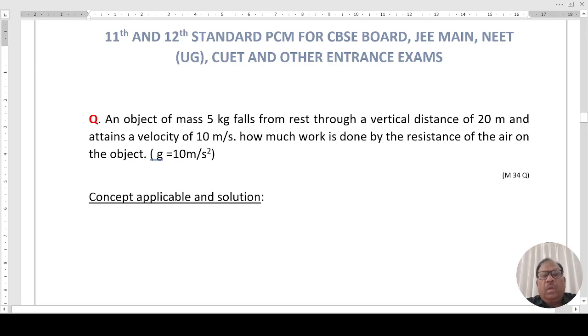Now let's start with the question. Question is: An object of mass 5 kg falls from rest through a vertical distance of 20 meter and attains a velocity of 10 meter per second. How much work is done by the resistance of air on the object.